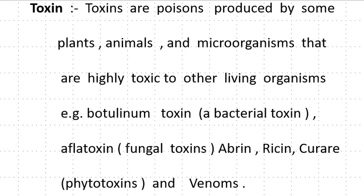What is Toxin? Toxins are poisons produced by some plants, animals and microorganisms that are highly toxic to other living organisms. For example, Botulinum Toxin produced by bacteria, Alpha Toxin produced by fungus, and Abrin, Ricin, Curare — they are produced by plants, and Venom by animals.